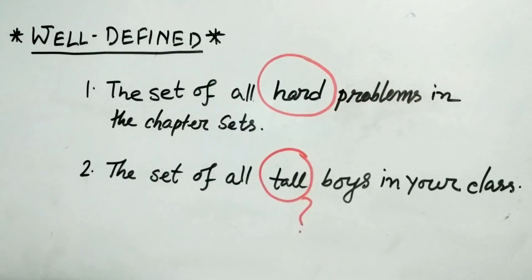If I talk about the set of all tall boys in your class then the same question arises that how this word tall can be well-defined? Because if a boy is taller than someone maybe he is shorter than another one. So obviously it is not well-defined. So it cannot form a set.